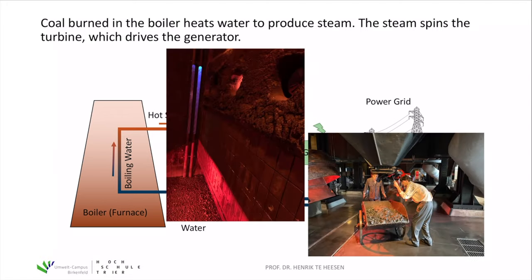Here you see two pictures of the inner part of the boiler — the water running through tubes in the boiler. Coal is burned to boil the water and we get hot steam. On the right-hand side, you see the ashes of the coal coming from the bottom of the boiler.